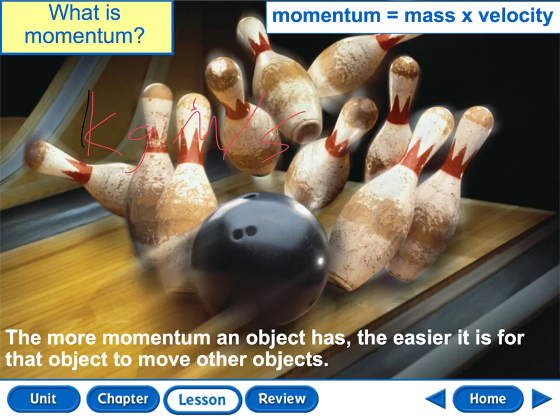We've answered a lot of questions today when discussing motion. Motion is the change in position over time. Position is the location of the object. The frame of reference is how we measure position and motion. Speed is the change of position over time — distance divided by time. Velocity is the measurement of speed and direction. Acceleration and deceleration are the change of velocity over time. And momentum is mass times velocity. If you have any questions, please leave a message in the comment section or message me on Edmodo.